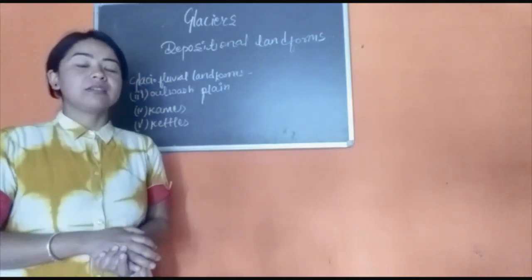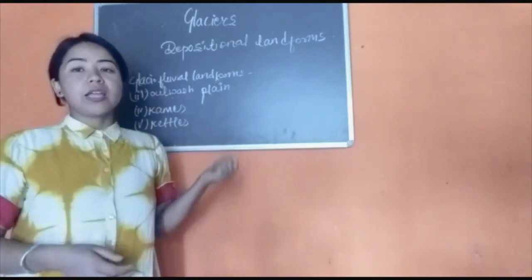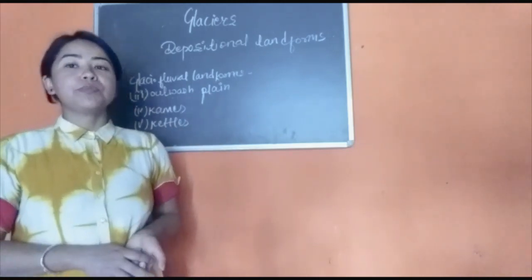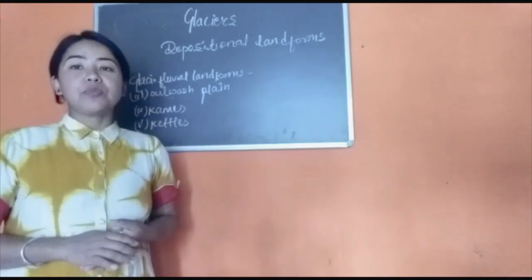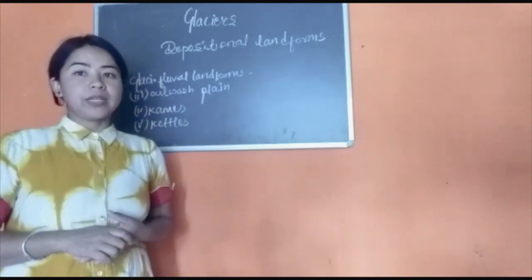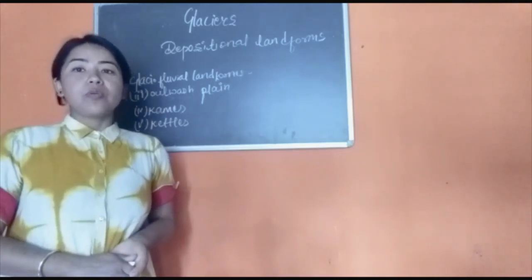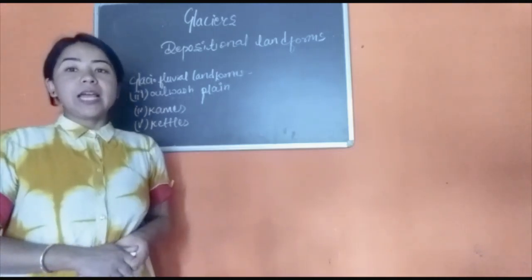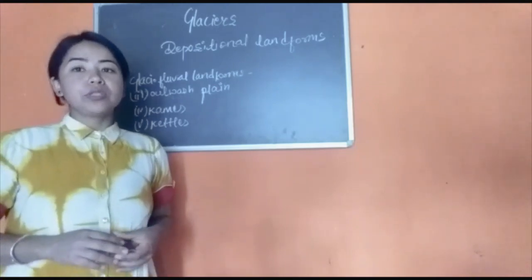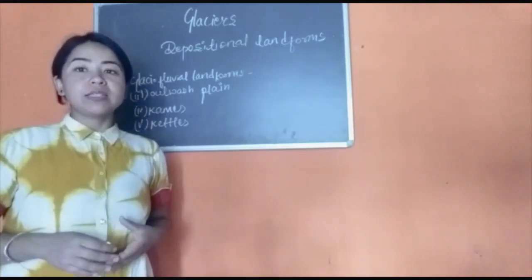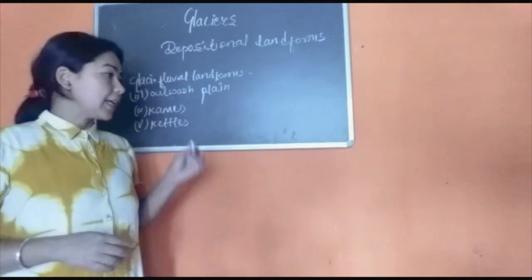Next, the last feature is kettles. Kettles are small hollows or depressions filled with water that we find in the outwash plain. Kettles are formed when dead ice gets immersed in the outwash plain, and in the course of time as the ice melts, it forms a lake known as a kettle lake or kettle.